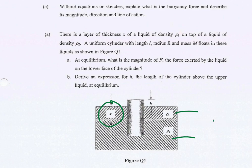We have a situation like this — two layers of liquid, each with their own density, and a cylinder floating in these two fluids. We have the value of X here, which is the area not submerged in the liquid, and we have the thickness of the first liquid. We need to calculate the force exerted by the liquid on the lower face, or the force of buoyancy that occurs in the system.